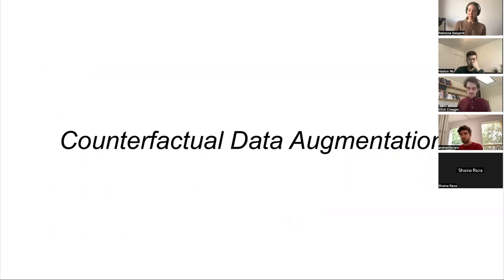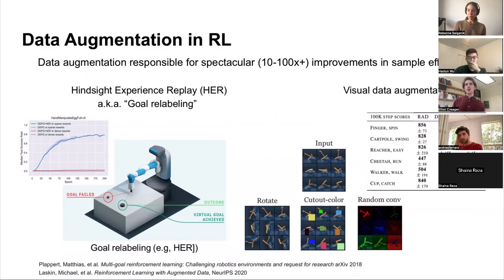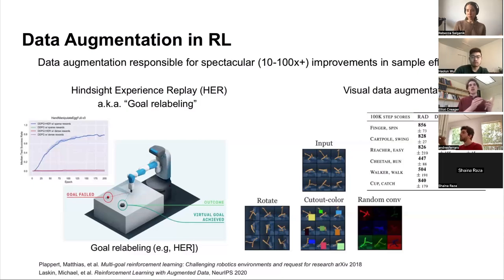Before we talk about counterfactual data augmentation, let's start with data augmentation in reinforcement learning. Similar to supervised and unsupervised learning, if you have a good augmentation scheme for the problem you care about, it tends to help. That's exactly what we see in RL — data augmentation can give you huge sample efficiency wins. In reinforcement learning we often care just as much about sample efficiency as absolute performance, because our learning algorithms tend to take a lot of interactions with the environment to converge.